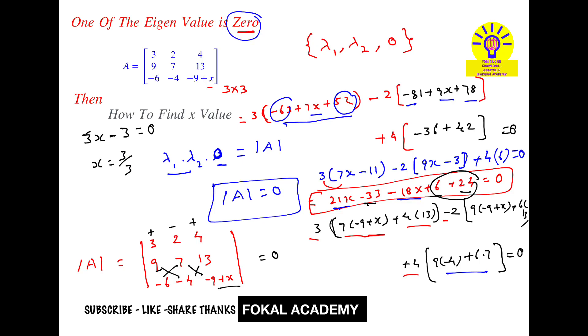So whenever x equals 1, one of the eigenvalues is 0 for this given matrix. And this is the process of simplification for getting the x value. Thanks for watching. Please subscribe, like, and share. Thanks.